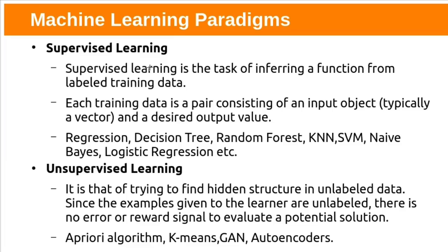We already know these machine learning paradigms, but let us see quickly. We have supervised, unsupervised and reinforcement learning. Supervised learning builds a model from labeled training data. In supervised learning, we will feed the algorithm with input and corresponding output values. Some examples are regression, decision trees, random forest, KNN, SVM, Naive Bayes and logistic regression. Unsupervised learning finds relevant patterns in unlabeled data. Here we will give only input and we will not give the output labels. Some examples are apriori algorithm, K-means, GANs and autoencoders.